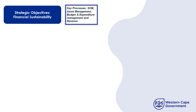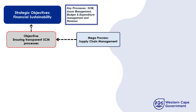This is a typical example of how we would perform a process breakdown. The strategic objective on the top left is financial sustainability, followed by all the key processes involved: supply chain management, asset management, and budget and expenditure. These processes are classified as mega processes. For this example we have selected supply chain management, and the objective of this key process is to ensure a transparent supply chain management process.